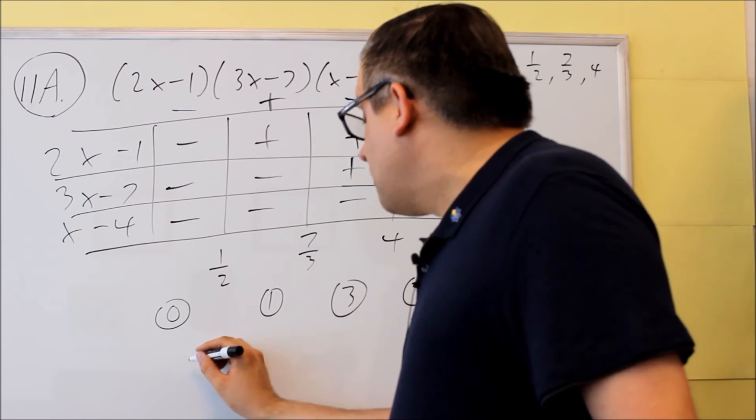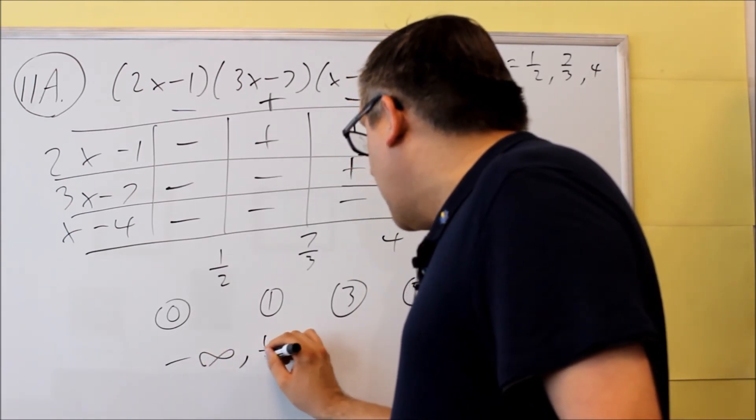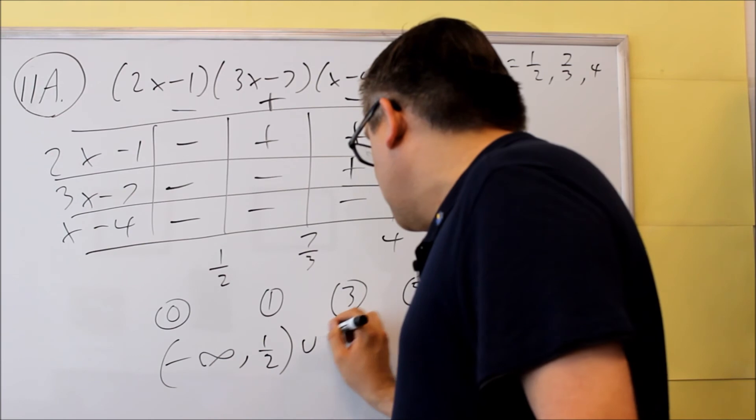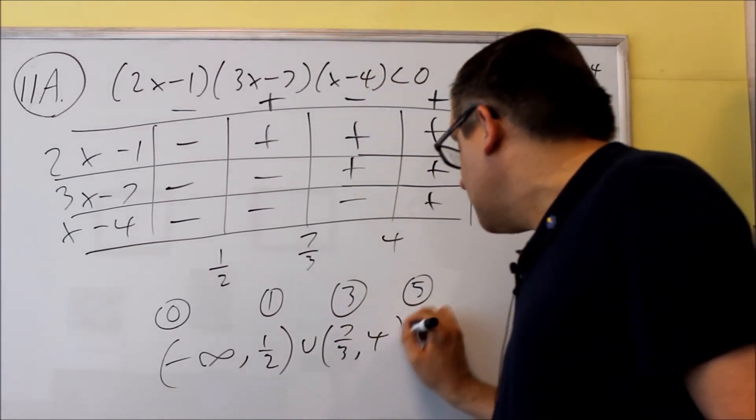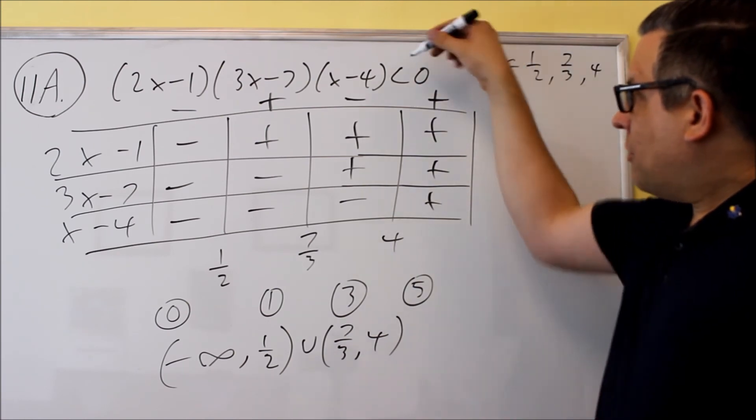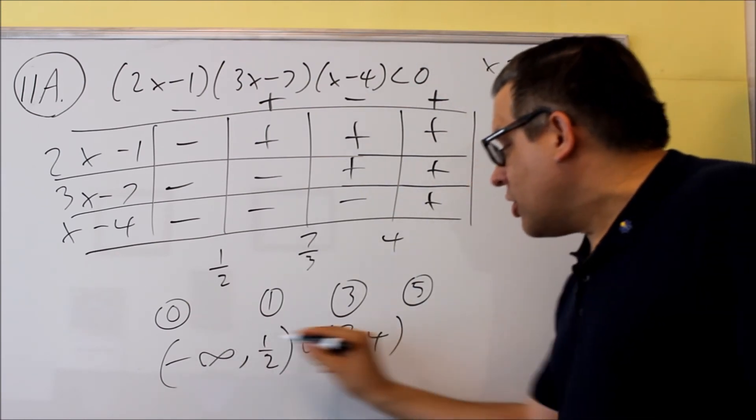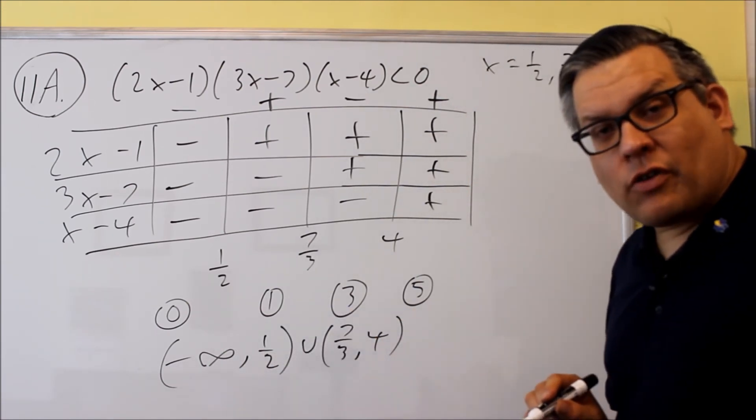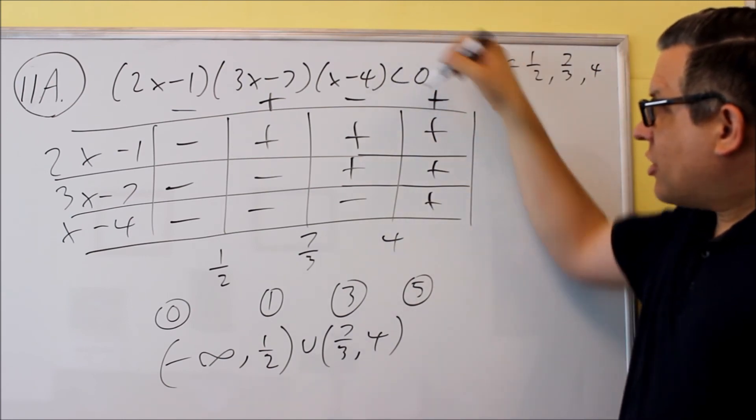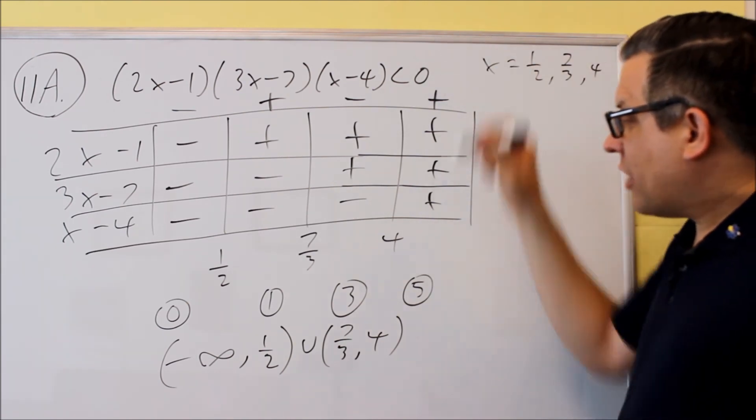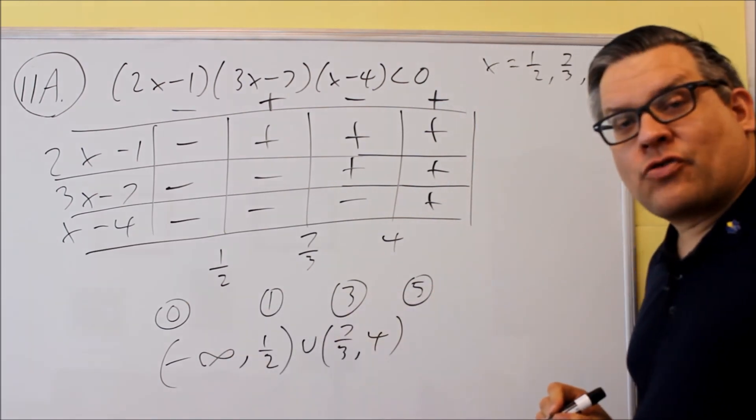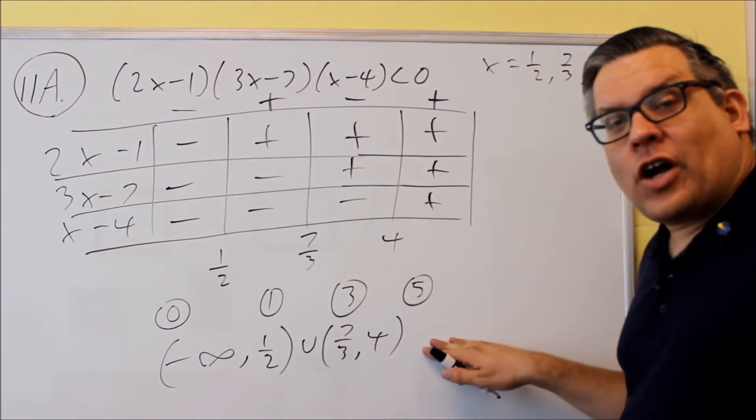and then I'm going to go from seven-thirds to four. Because it's less than, I'm always going to be using parentheses for everything. If I had a less than or equal over there, then I'd be using brackets for my answer, but because it's less than, I'm going to use parentheses for everything, and this will be our final answer.